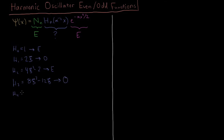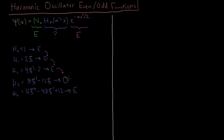We can start to see the pattern emerging. The fourth Hermite polynomial H4 is 16c to the fourth minus 48c squared plus 12. Even plus even plus even is even. So the polynomials are alternating between even and odd: even, odd, even, odd, even, as our quantum number n changes.